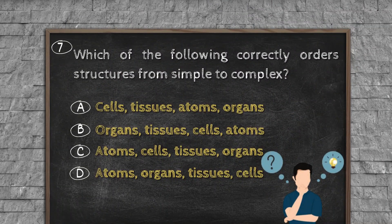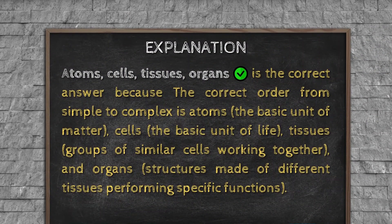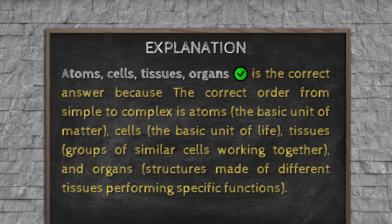Question number seven. Which of the following correctly orders structures from simple to complex? Option A, cells, tissues, atoms, organs. Option B, organs, tissues, cells, atoms. Option C, atoms, cells. Option D, atoms, cells, tissues, organs. Explanation: Atoms, cells, tissues, organs is the correct answer because the correct order from simple to complex is atoms, the basic unit of matter; cells, the basic unit of life; tissues, groups of similar cells working together; and organs, structures made of different tissues performing specific functions.